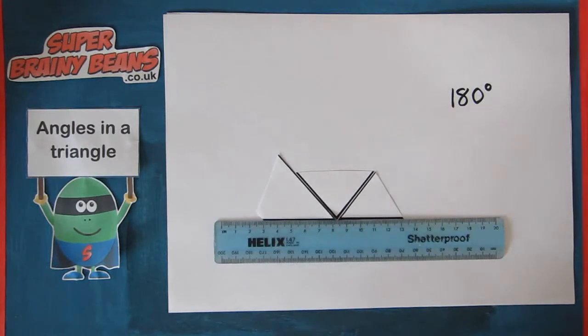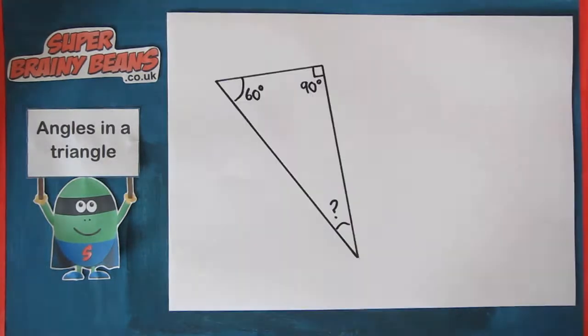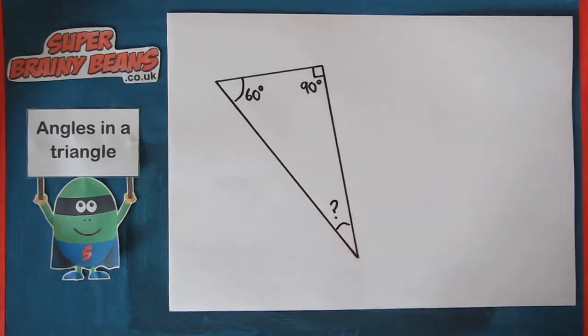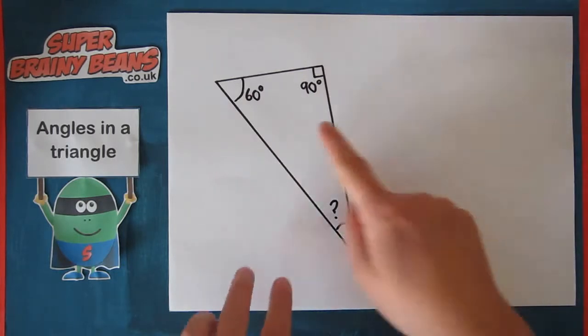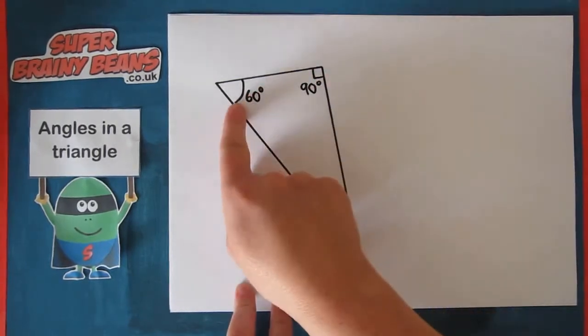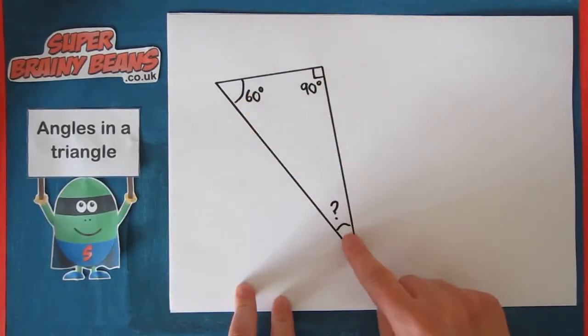You can try this with any triangle. Knowing that the points of the triangle all add up to 180 degrees, we can therefore work out an angle in a triangle. Here we know this is 90 degrees, this is 60 degrees, but we don't know this.